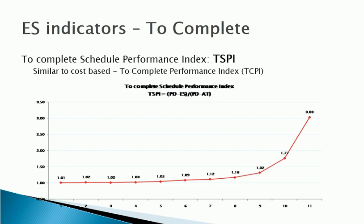The project manager has a few options: one is to have the project team work more efficiently for the remaining time; the other option is re-estimating and re-baselining to increase project duration, which will also increase cost.